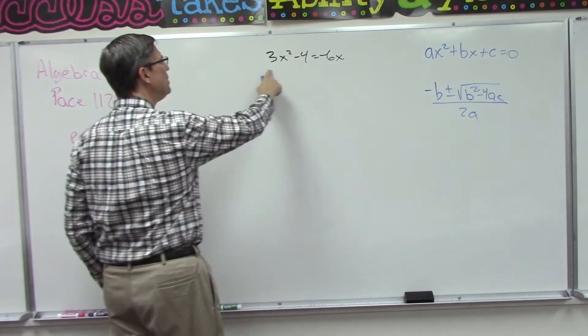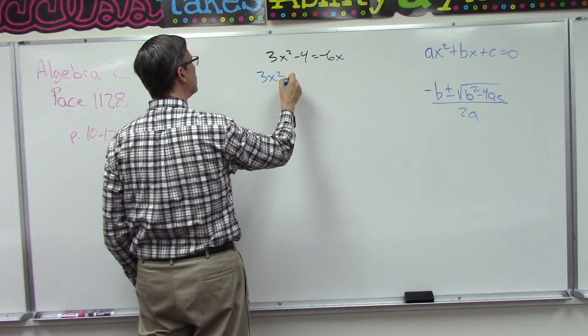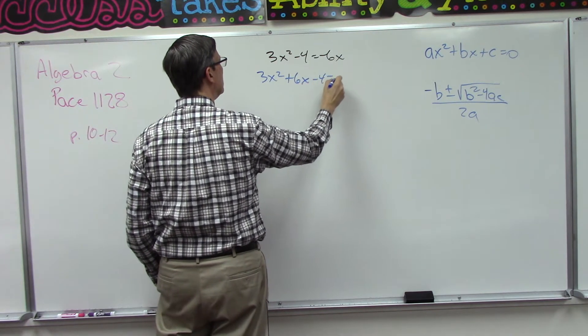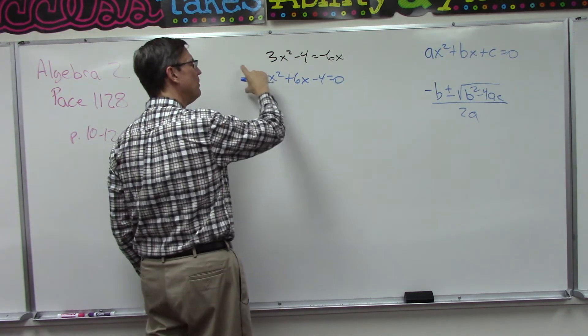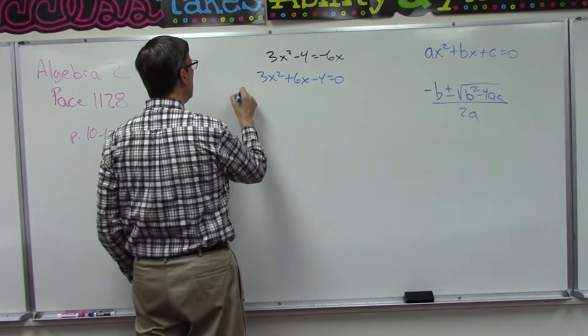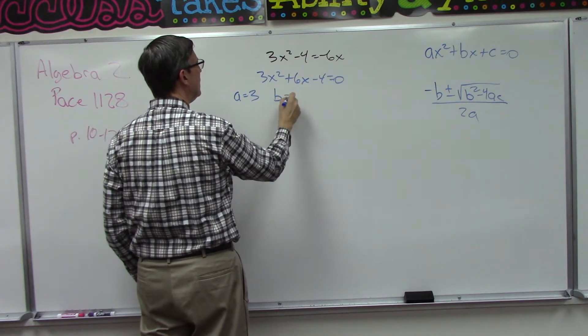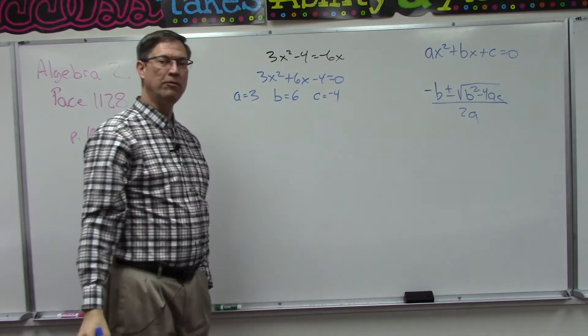Now in this equation, we need to first bring this over so that it's in this form: 3x squared plus 6x minus 4 equals 0. So we brought this over, made it positive, but now we have it in descending order. That means that a is positive 3, b is the number 6, and c is negative 4.